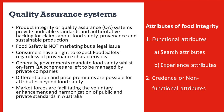In food systems, they can generally be categorised into five types: provenance, production system, variety or breed, use of inputs such as pesticides or fertilisers, and ways of post-harvest handling. Product integrity or quality assurance systems provide auditable standards and authoritative backing for claims about food safety, provenance and sustainable production.